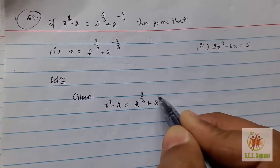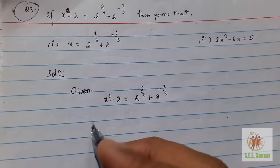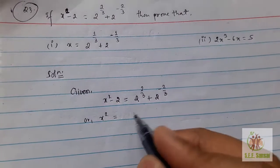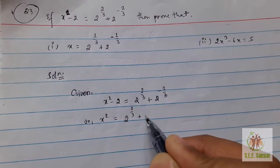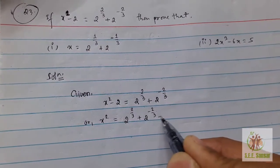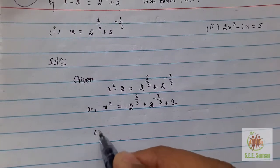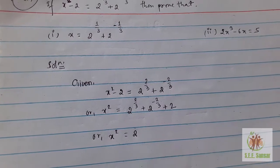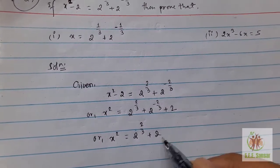Given x² - 2 = 2^(2/3) + 2^(-2/3). Use your logic, take this 2 to the right hand side, or x² = 2^(2/3) + 2^(-2/3) + 2. Just arrange them. Let's see what happens when you arrange them: 2^(2/3) plus, just bring this 2 in the middle.